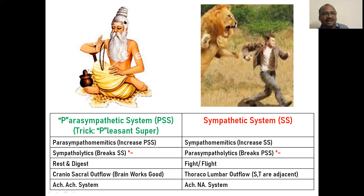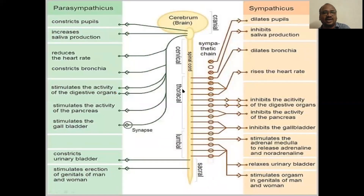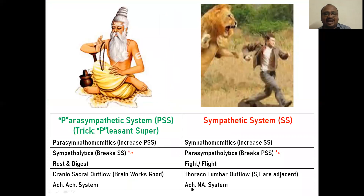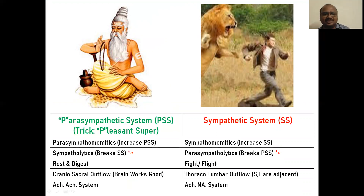Brain will work well. Craniosacral — pleasant system. Here, thoracolumbar. This is thoracic and this is lumbar — thoracolumbar. This is craniosacral. And this is called the acetylcholine-acetylcholine system. Both A — acetylcholine-acetylcholine. This is the acetylcholine-noradrenaline system.